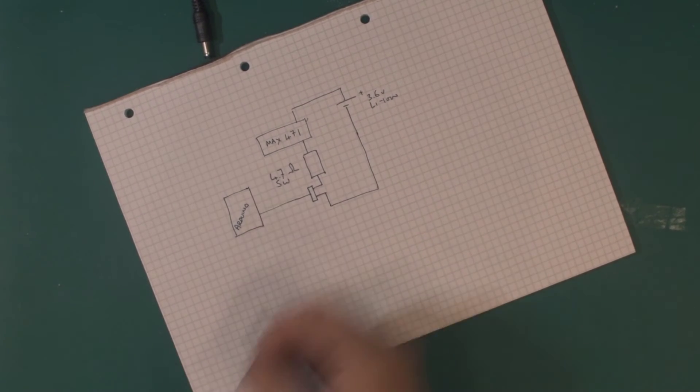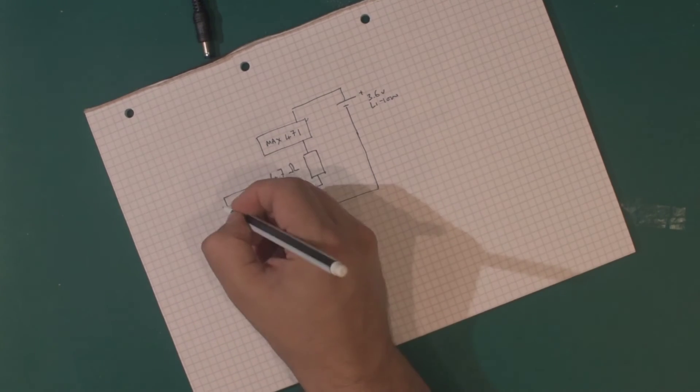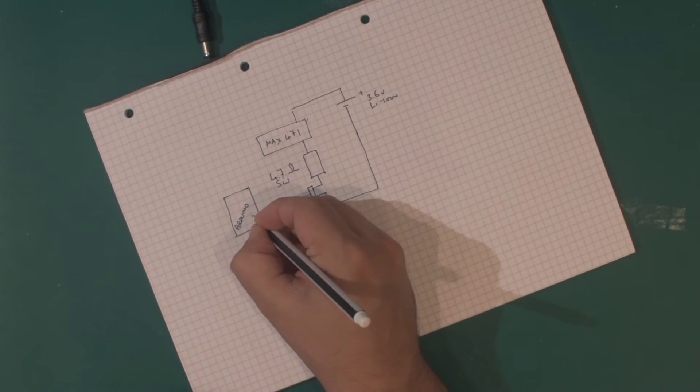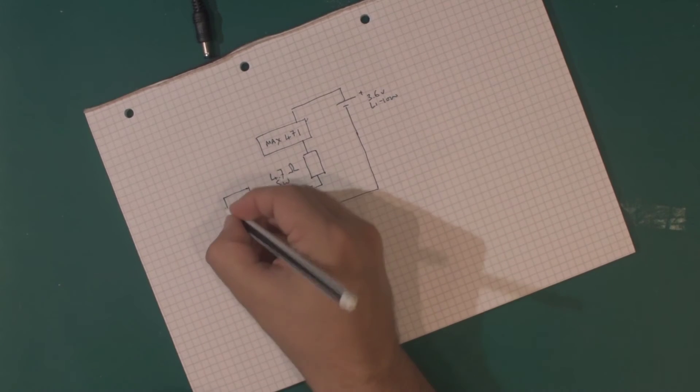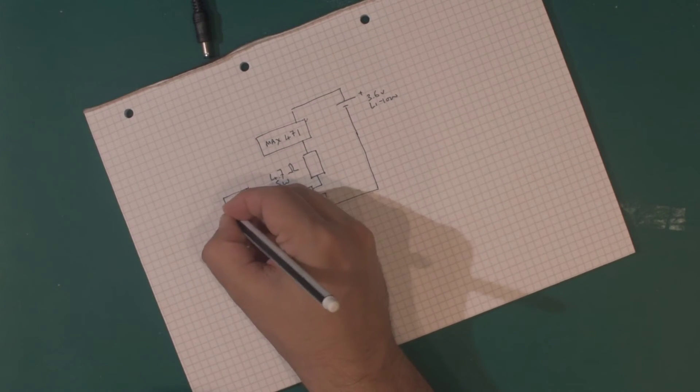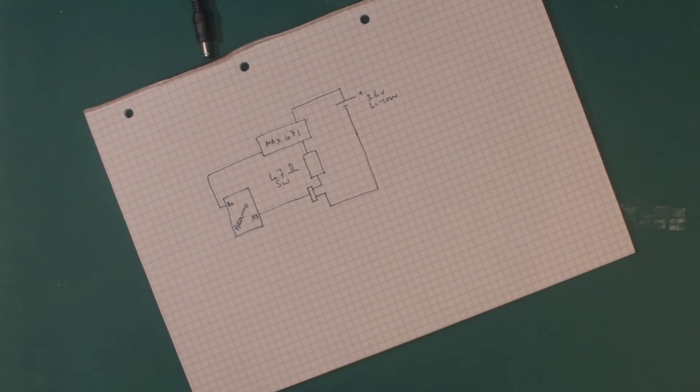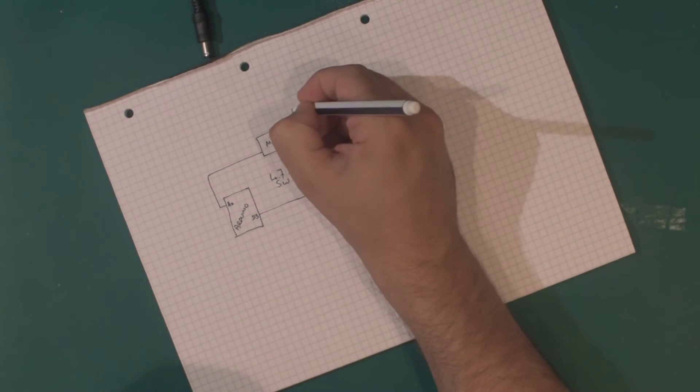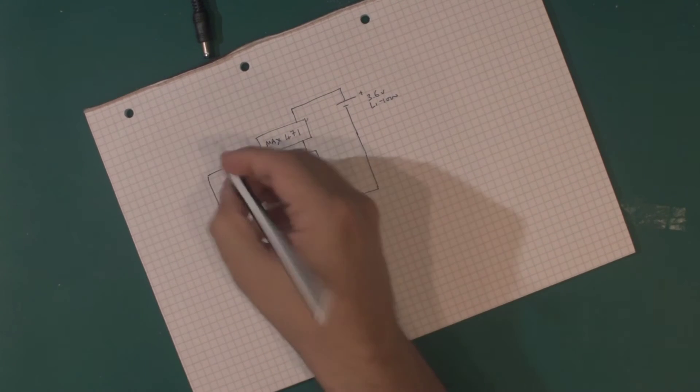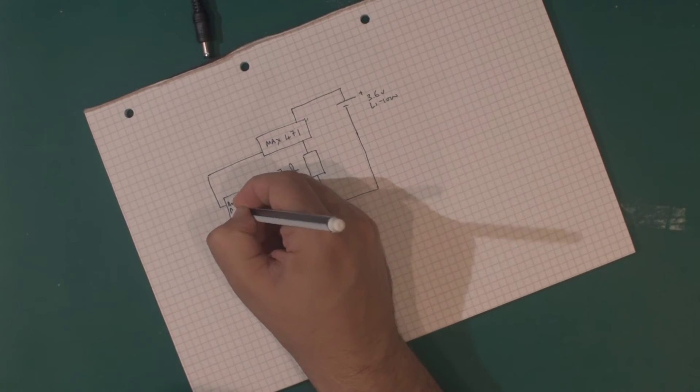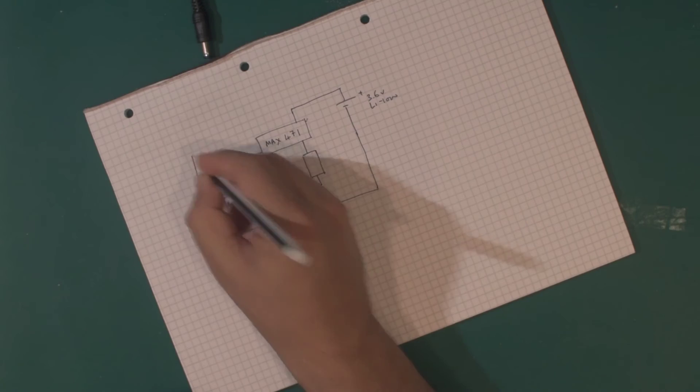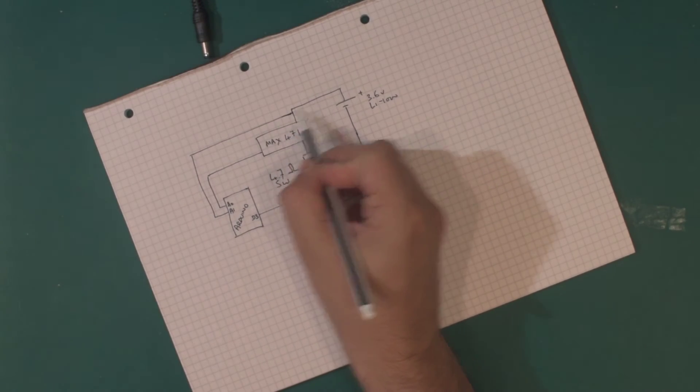And then looping back around to the ground. So we also have - this is a digital pin, this is digital 3 for example. And then analog 0 is connected to the output of this current sensing chip, and then we also have analog 1 which is connected up here.